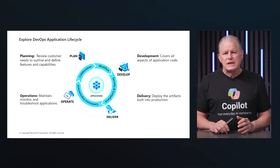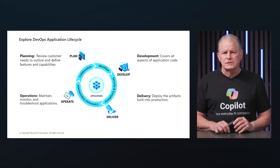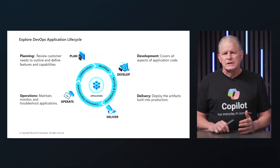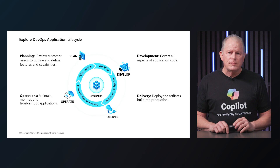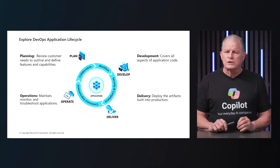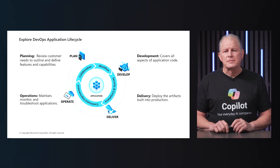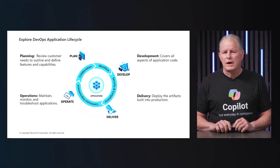Delivery ensures that the software is delivered to the end users efficiently and without errors. Operations involves maintaining, monitoring, and troubleshooting applications in the production environment. It focuses on ensuring that the application runs smoothly and efficiently with minimal downtime and quick resolution if any issues arise.